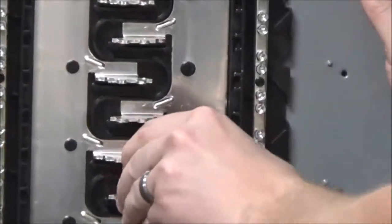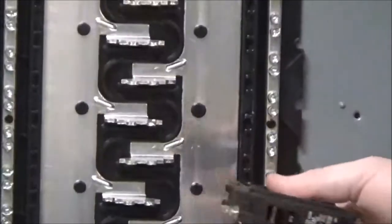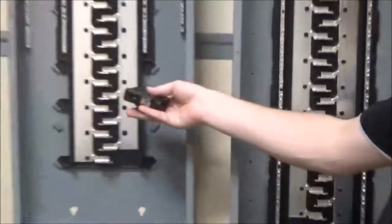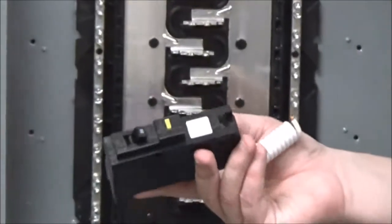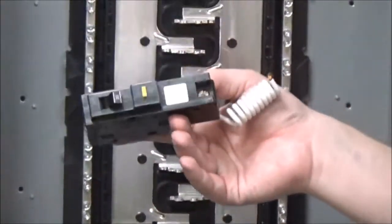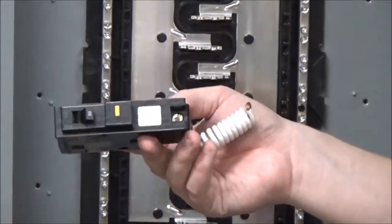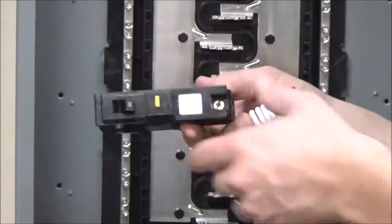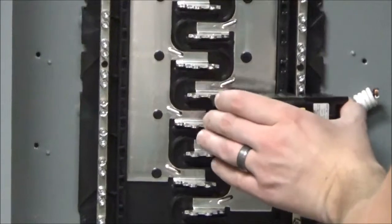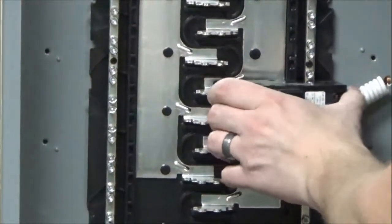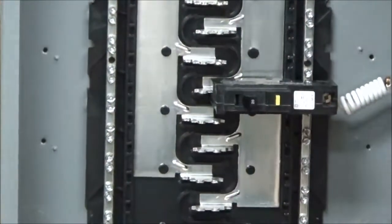The same procedure is followed for the standard GFI dual function and arc fault breakers with the pigtail. You slide it on and rock forward. You will see that it can be installed in the plug-on neutral panels as well as the standard panels.